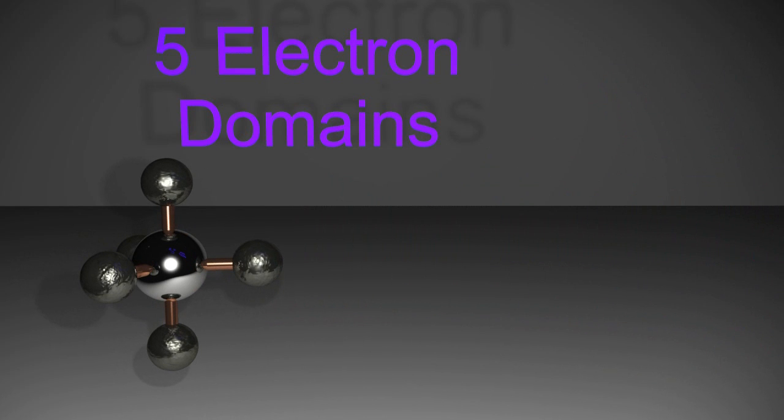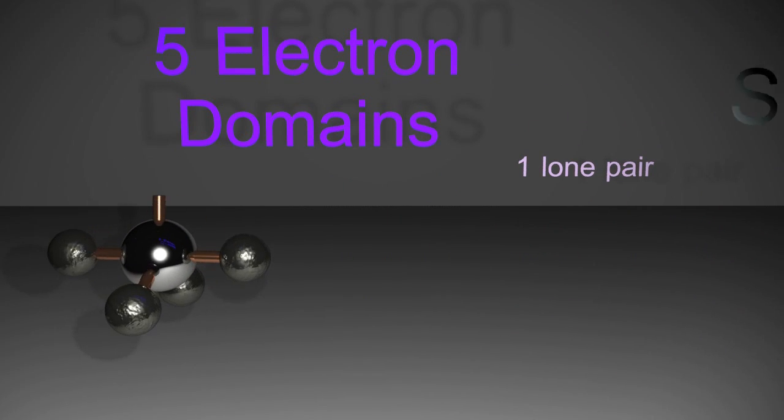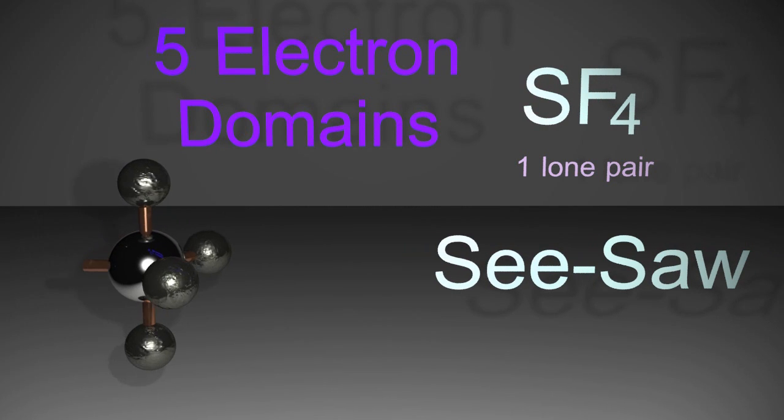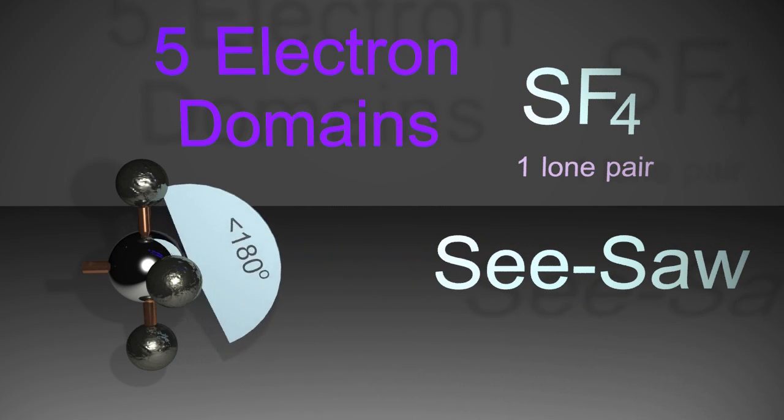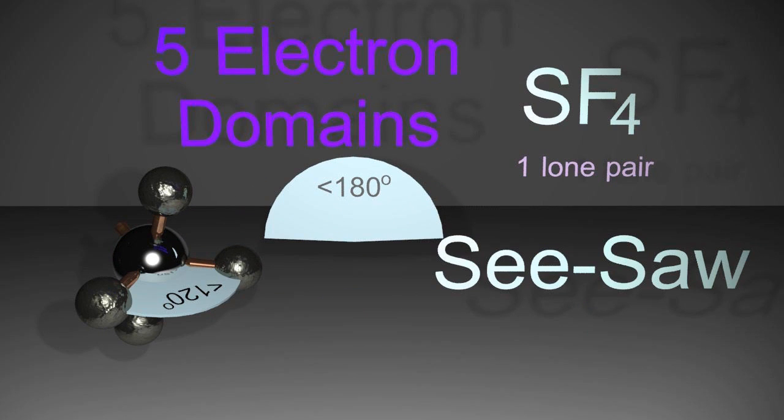But if an atom is removed leaving a lone pair, now the bond angles are going to slightly change because the lone pair is extra repulsive. Given a slightly less than 180 degrees and slightly less than 120 degrees, that lone pair is forcing the bonded pairs slightly closer together.